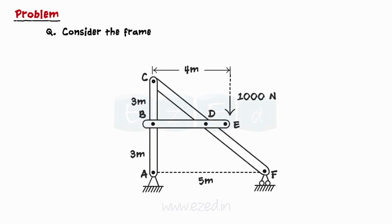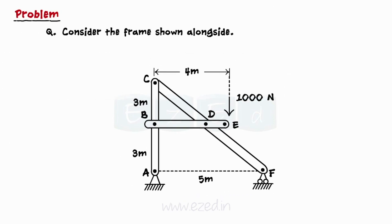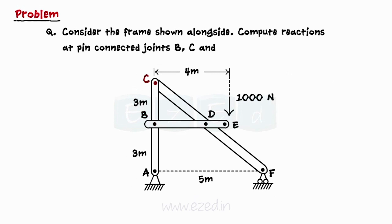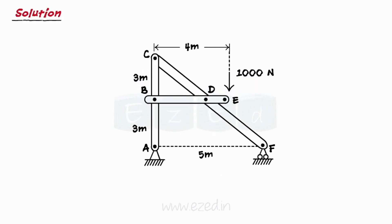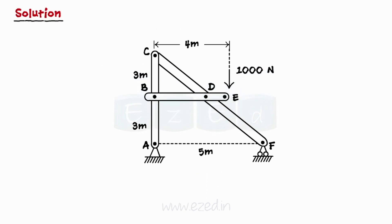Consider the frame shown alongside. Compute reactions at pin connected joints B, C, and D. In this case, we only have to find pin reactions at B, C, and D.